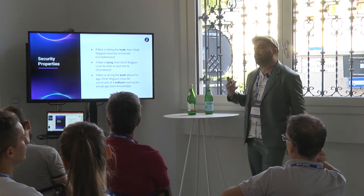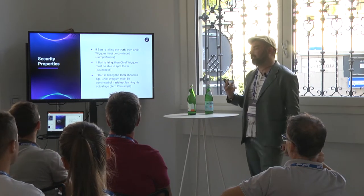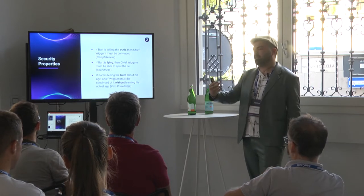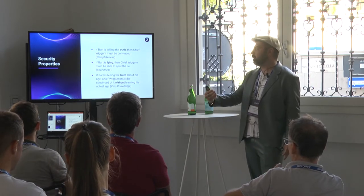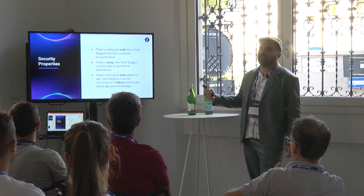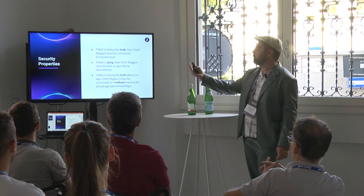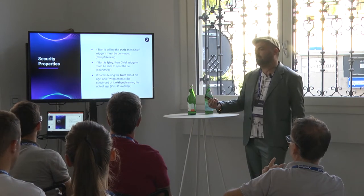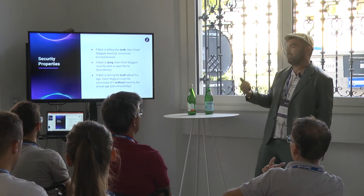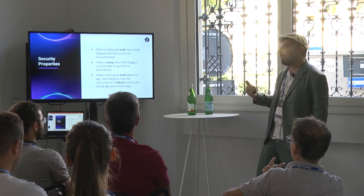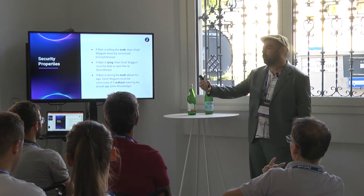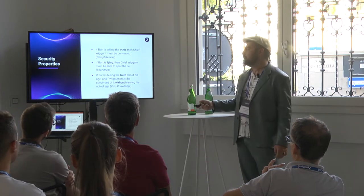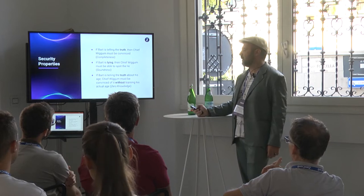There are two additional properties. First, completeness: if the prover claims a statement is true and it is indeed true, then the verifier must be convinced of it. Second, soundness: if the prover is cheating and claims the statement is true even if it isn't, then the verifier must spot the lie and must not accept. And of course, there is the zero-knowledge property itself.